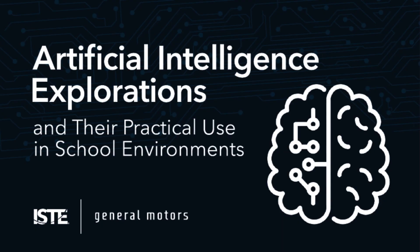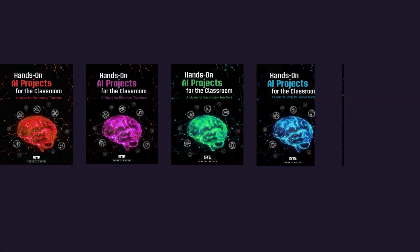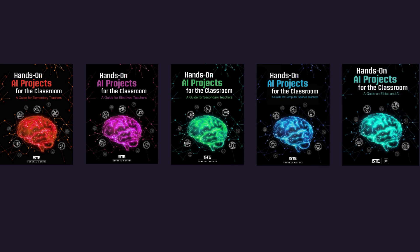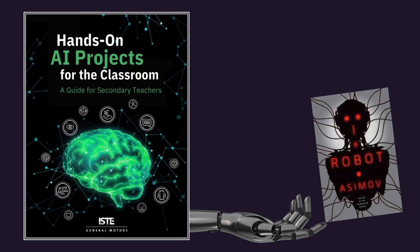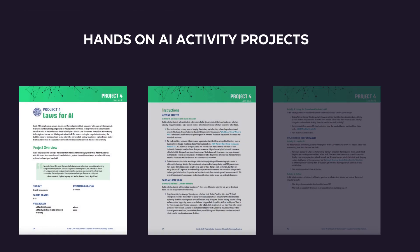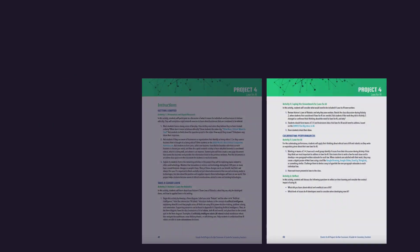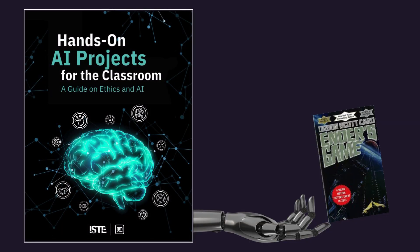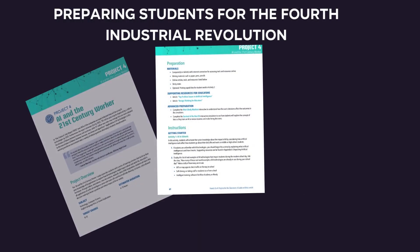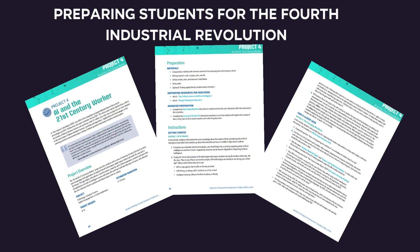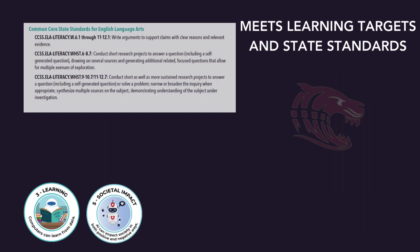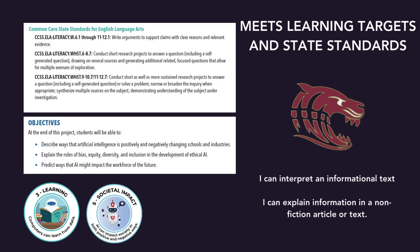ISTE has created hands-on projects in the classroom guides that provide materials and information that can be followed directly or may be remixed to pair with curriculum already in use by the classroom teacher. The suggested activities make it easy for teachers to begin incorporating engaging lessons on AI together with materials that teachers feel familiar with, allowing them to meet state standards and learning targets.